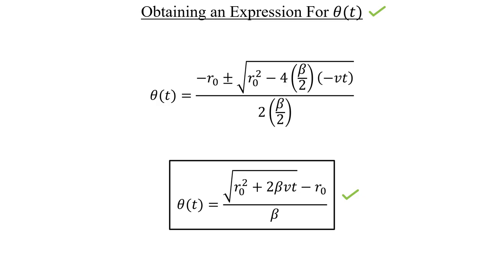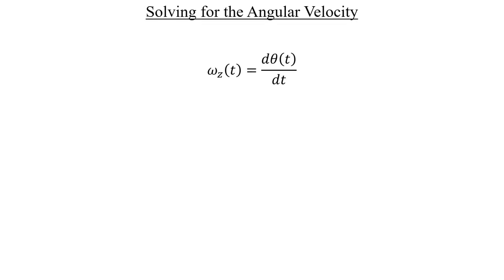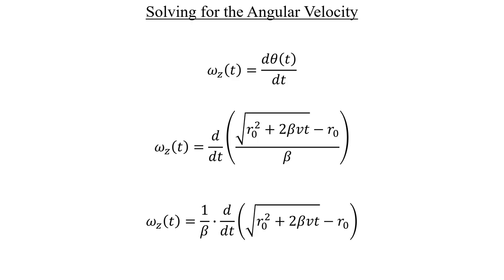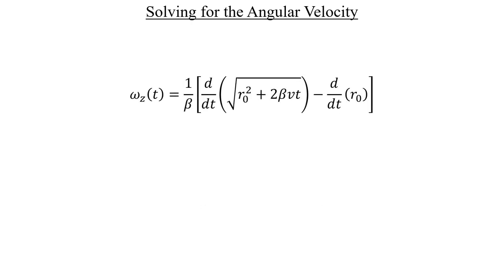Let's move on to part C. We want the angular velocity as a function of time, which means we can use this definition to help us out. Let's insert the expression for theta of t and then pull out the beta constant from the denominator. The derivative can be distributed to both terms inside the parentheses. And since R-naught is a constant, its derivative is zero. So we can drop that term entirely and just ignore it.